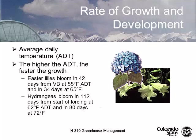We can use this in our greenhouses with a concept called average daily temperature. The higher the average daily temperature in many crops, the faster the growth. For instance, Easter lilies bloom in 42 days from visible bud at 55 degrees average daily temperature, but if we increase the average daily temperature to 65, we can cut it down to 34 days.